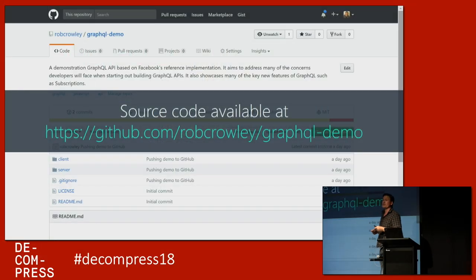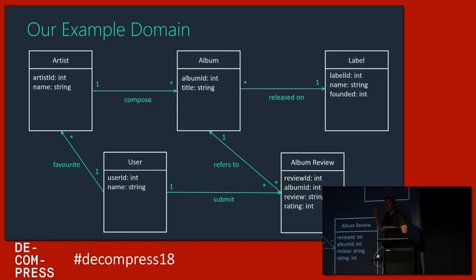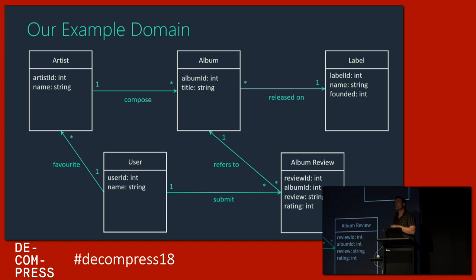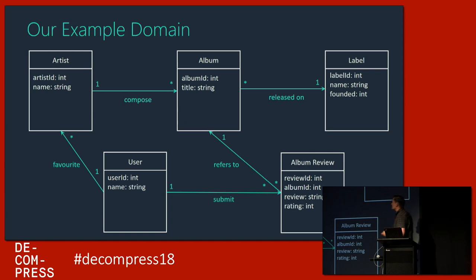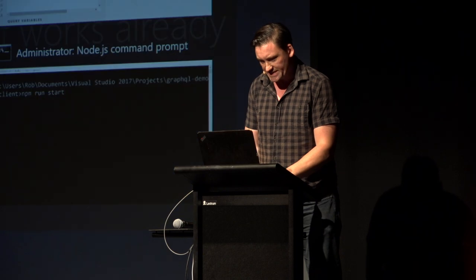I've written a sample app that seeks to address the main challenges you'll face when getting started with GraphQL. I'll put up a reference slide at the end. The domain we cover in the app and the demos today is simple — it's about artists and albums. Artists compose albums, those albums are released on labels, and we also have the idea of users who can submit reviews of albums. That's the domain and schema we'll see as we go through the demos.